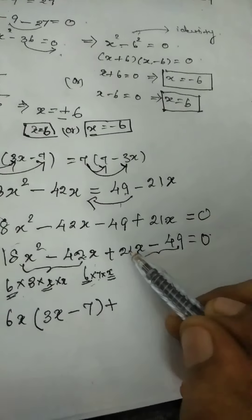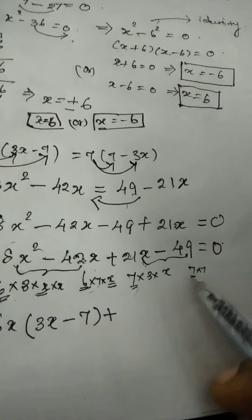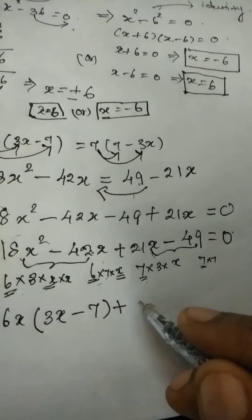So like this the same way you have to apply here also for 21x how can you write 7 into 3 into x. And 49 we can write 7 into 7.